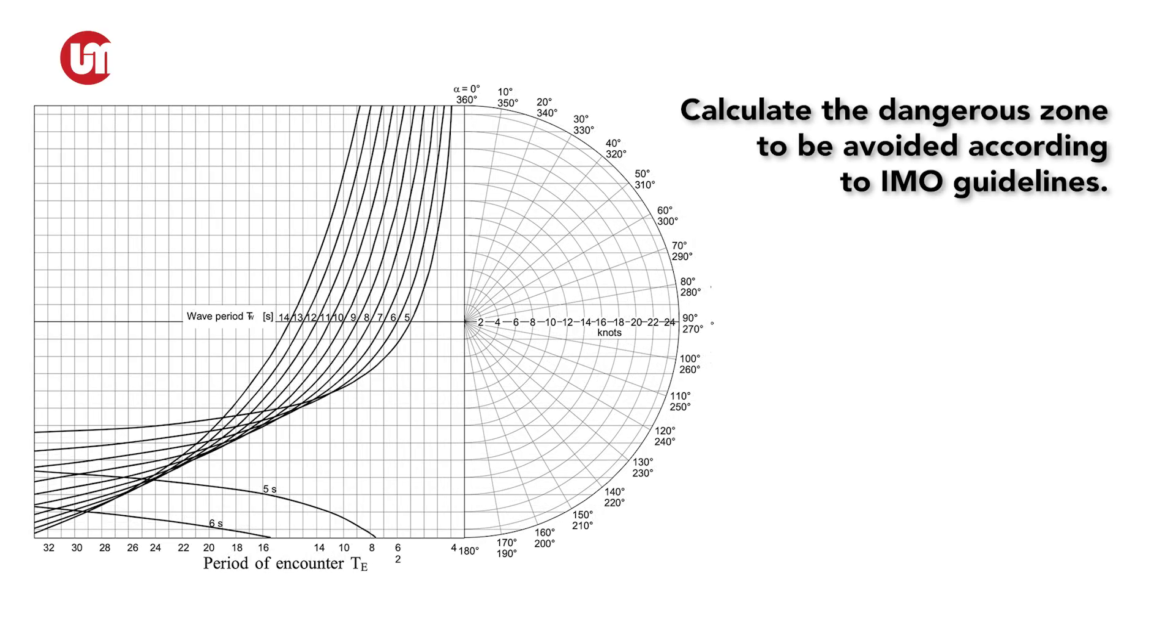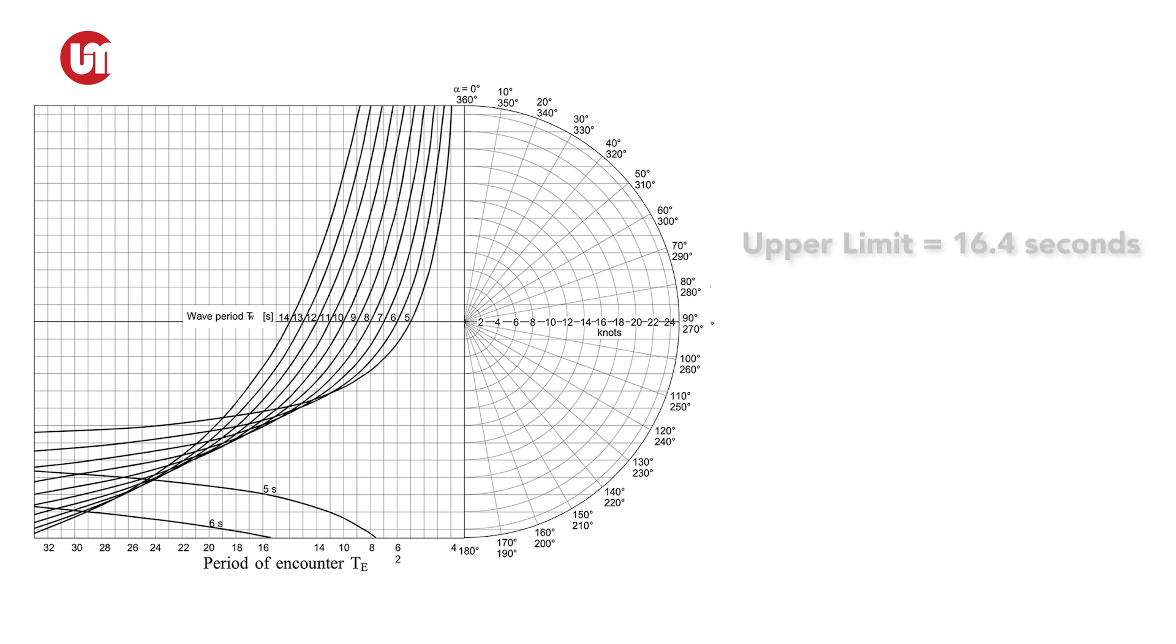We need to calculate the zone to be avoided using the formula for the calculation of upper limit and lower limit. For the upper limit, you need to get the quotient of the natural rolling period and the constant 1.7. For the lower limit, you need to get the quotient between the natural rolling period and the constant 2.2. In our example, we calculated the upper limit as 16.47 seconds and the lower limit is 12.7 seconds.